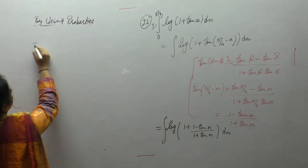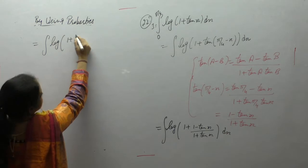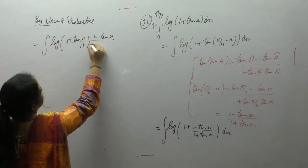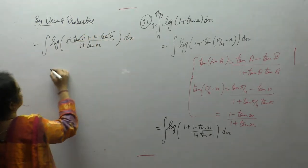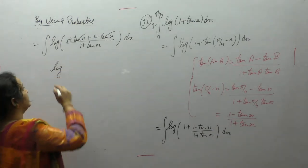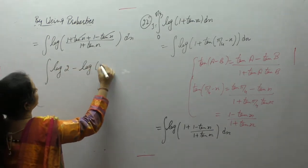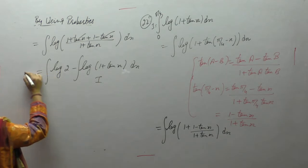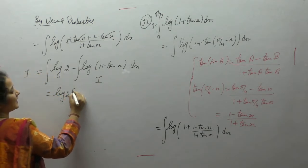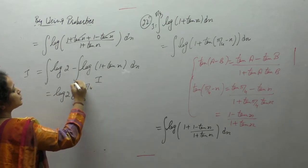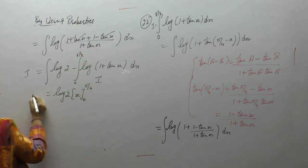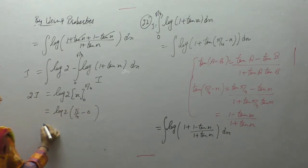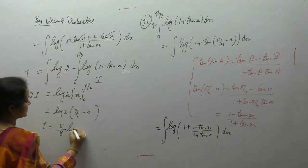Taking the LCM, and using log(A/B) = log A - log B, we get this equals I again. So 2I equals the integral of log 2, which is constant. The integral of 1 is x, with limits 0 to π/4. Therefore I plus I = 2I, and I equals π/8 · log 2.